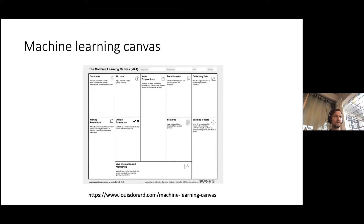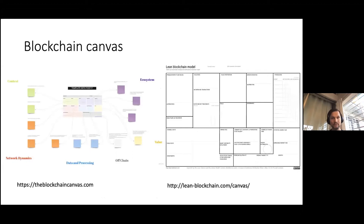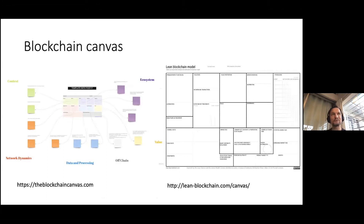The ML Canvas is very useful for students thinking about problems before they know how to build machine learning and AI solutions. You can build a wonderful algorithm that doesn't really think about the problem properly — building wonderful software for the wrong thing. There are also blockchain versions: a blockchain canvas and a lean blockchain canvas you can use to figure out whether a blockchain model is right for your business, since not everything is necessarily suitable for a blockchain solution.